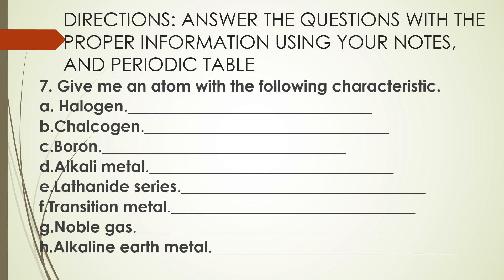Number seven: give an atom with the following characteristics — (a) a halogen, (b) a chalcogen, (c) boron group, (d) alkaline metal, (e) lanthanide series, (f) transition metal, (g) noble gas, and (h) alkaline earth metal.